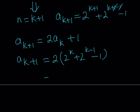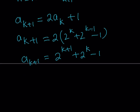Based on our assumption, a_k equals 2 to the power of k plus 2 to the power of k minus 1 minus 1. So let's distribute: this gives us 2 to the power of k plus 1, plus 2 to the power of 1 times 2 to the power of k minus 1. This tells us that our formula for a_k implies a_{k+1}, which means by mathematical induction, this formula is true — it's been proven.